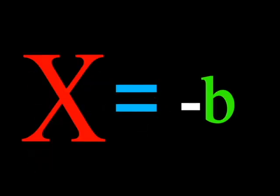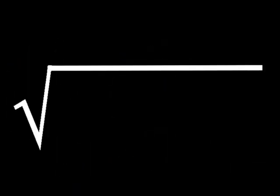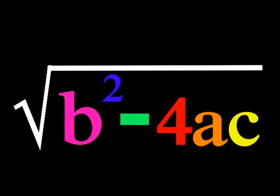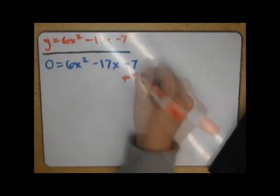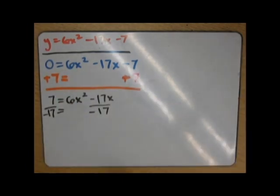x equals negative b, plus or minus the square root of b squared minus 4ac, all over 2a. All the other ways to solve, countless we've made before. This formula above all solves the problems that drive you berserk.